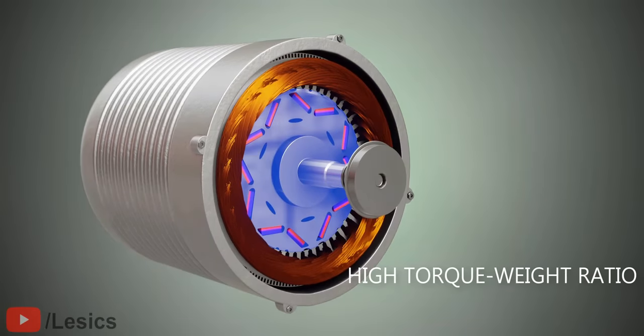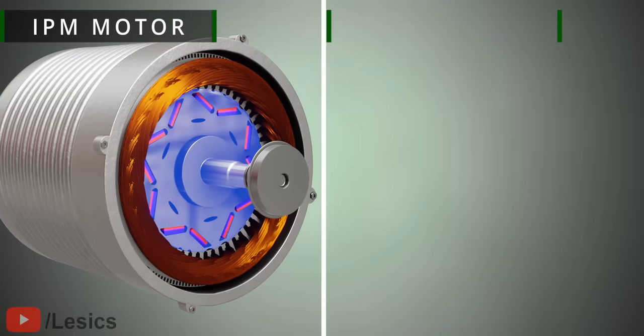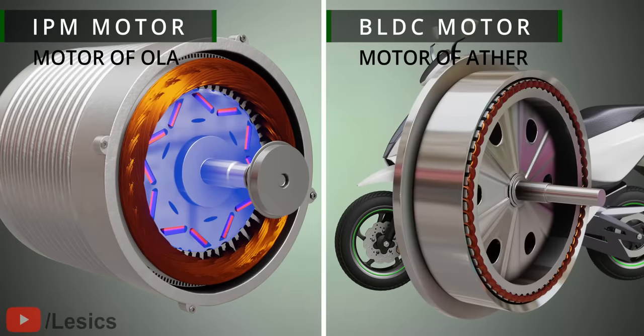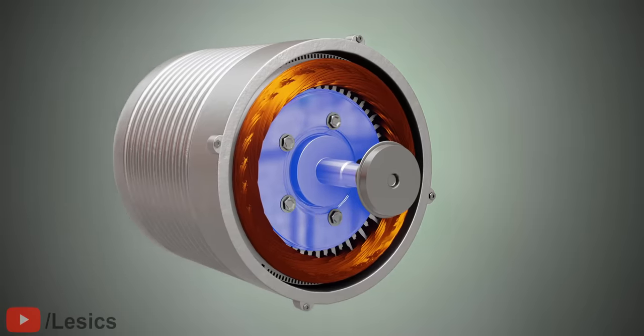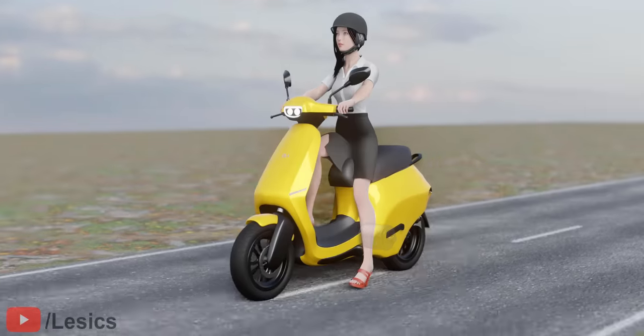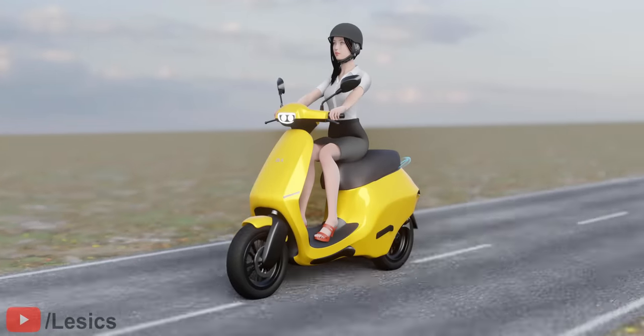When we compare the IPM motor with the BLDC surface mount motors used in most other e-scooters, the IPM motors give higher torque for the same volume because of the additional reluctance torque the IPM's iron rotor provides, which is why you get greater acceleration when you start your Ola scooter.